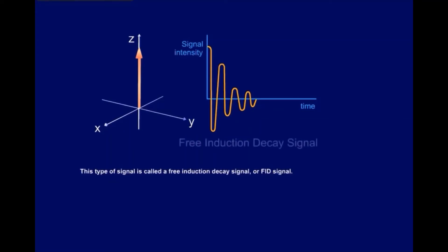This type of signal is called a free induction decay signal, or FID signal. By now, it should be obvious that the magnetic vectors directly determine the MRI signal and signal intensity by inducing electric currents in the antenna.